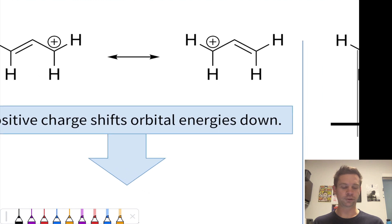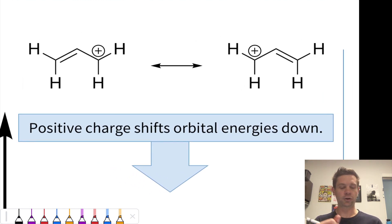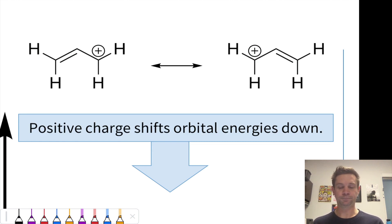We can draw resonance structures to illustrate the delocalization of positive charge. This cation is known as the allyl cation, and if I push electrons, these pi electrons over, now this CH2 is neutral, now this CH2 is positively charged, and these show the delocalization of positive charge over the ends of the pi system.